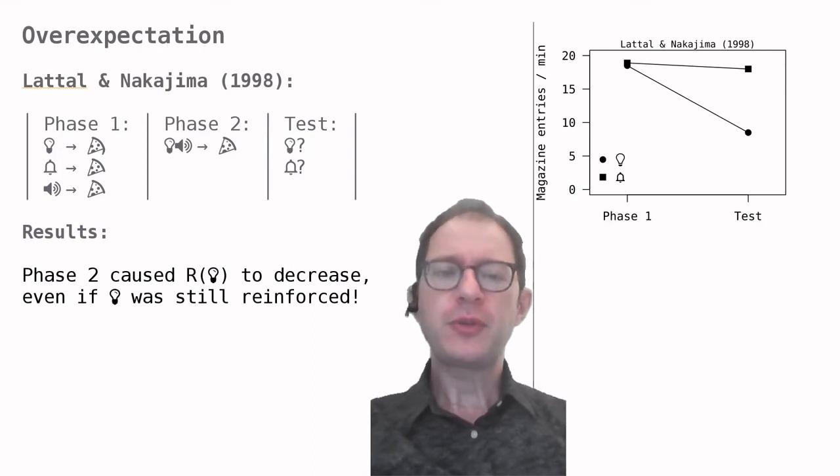The results show that responding to the light and bell was the same at the end of phase 1, so the training was equally effective in the beginning, but after phase 2, responding to the light had decreased a lot. This is puzzling, because it means that rewarding the light with food during phase 2 led the rats to care less about the light.